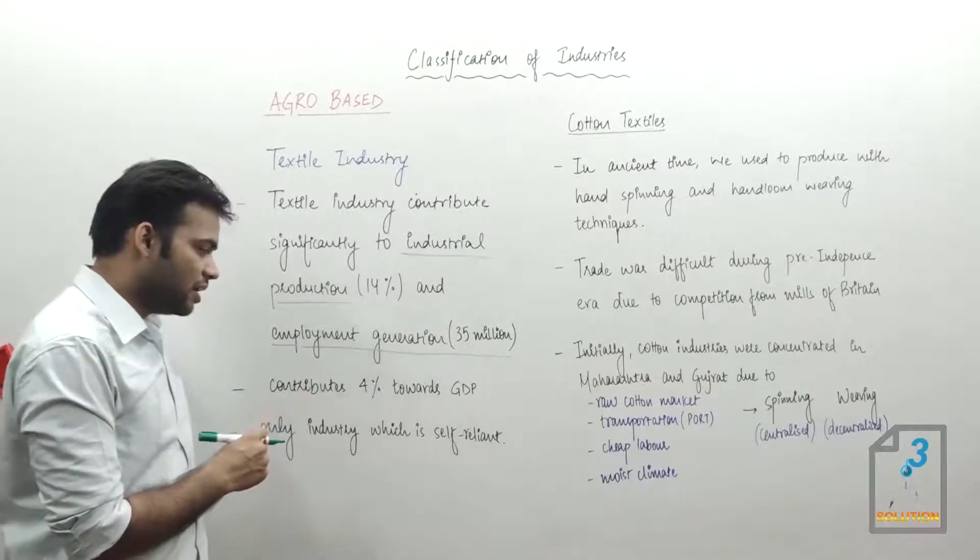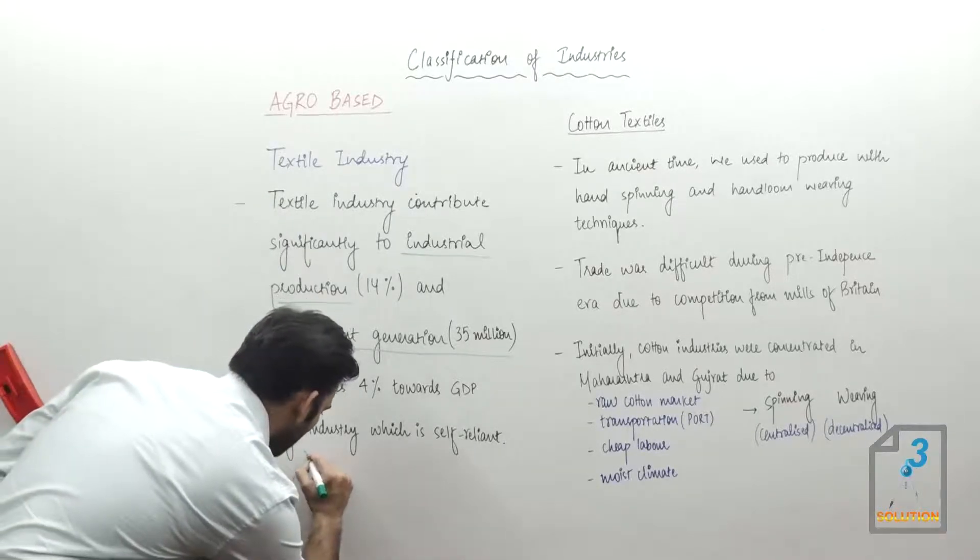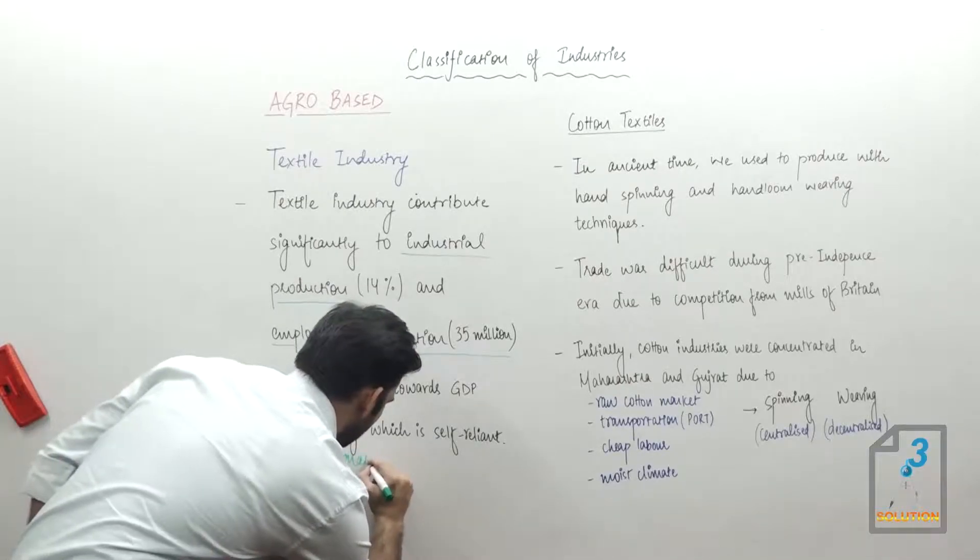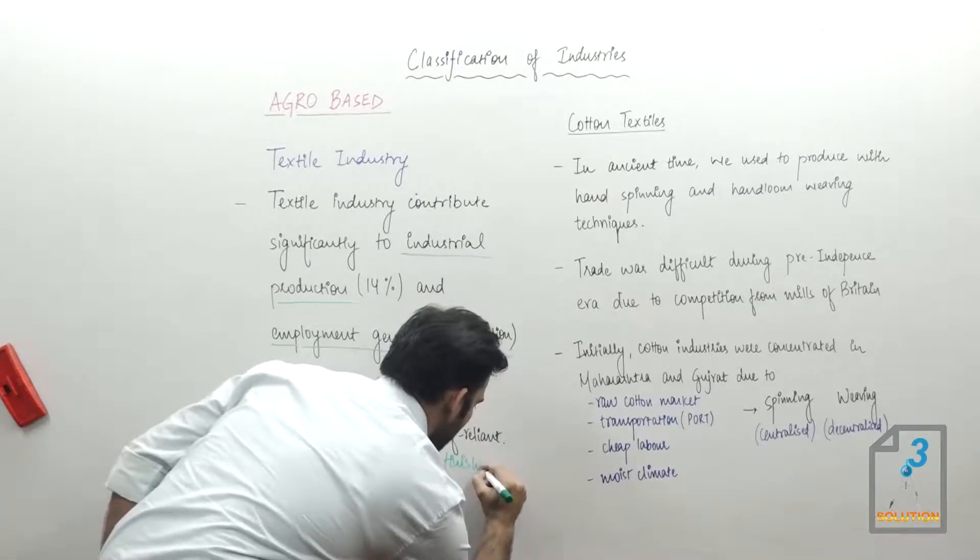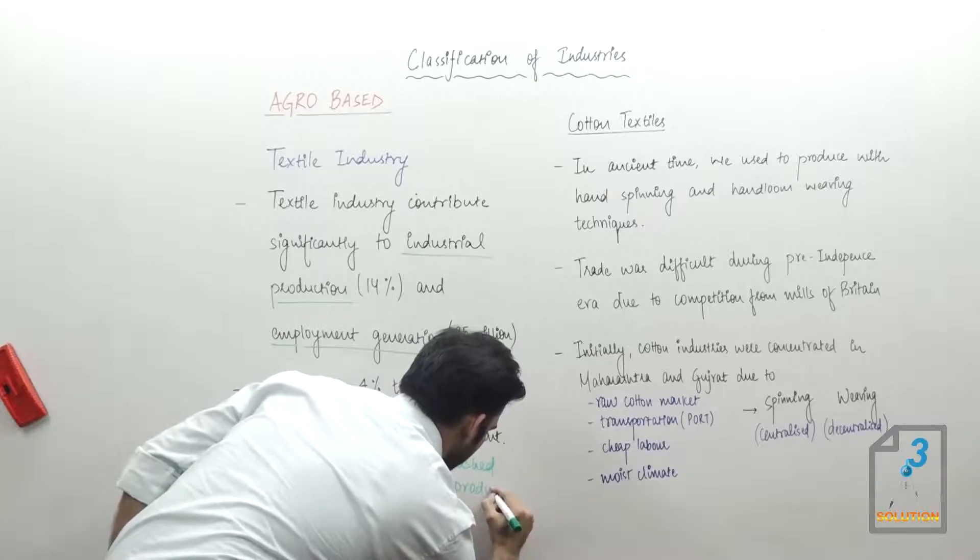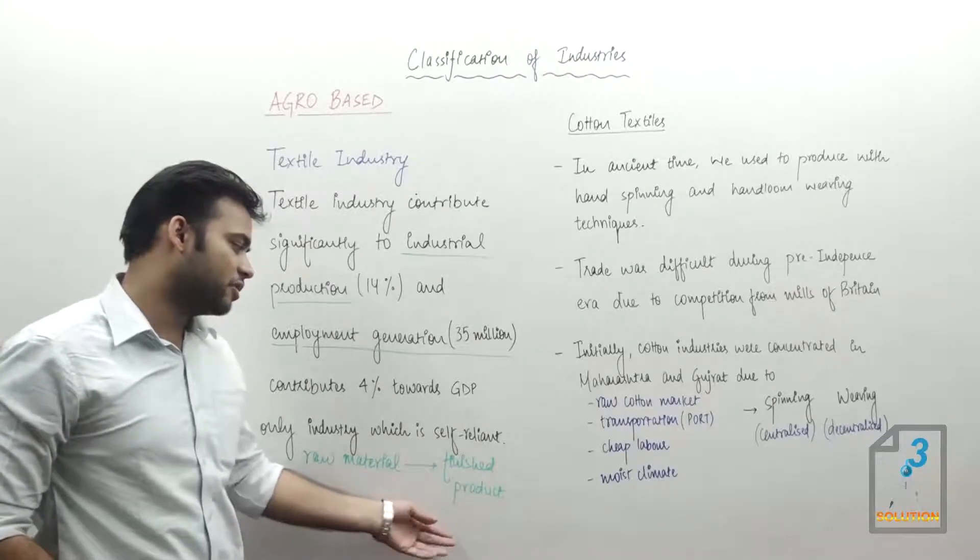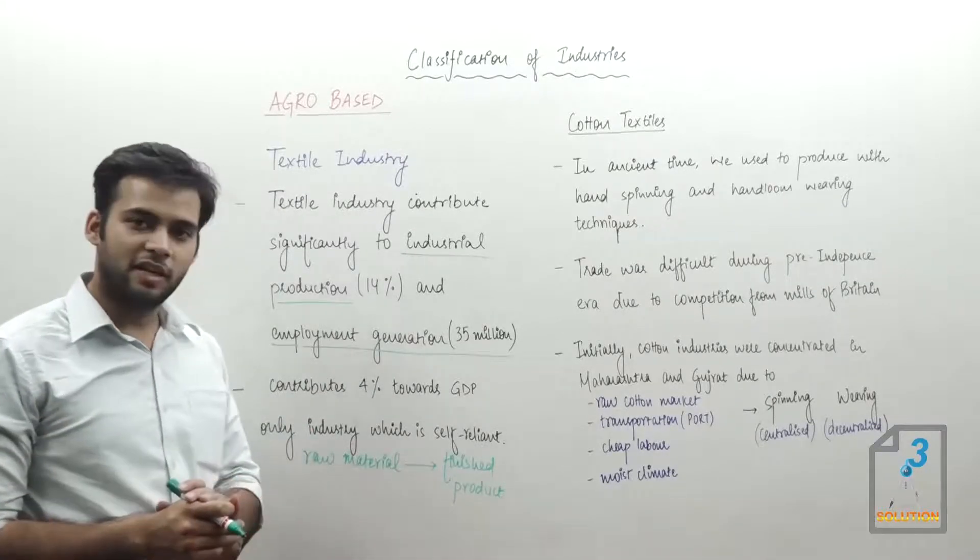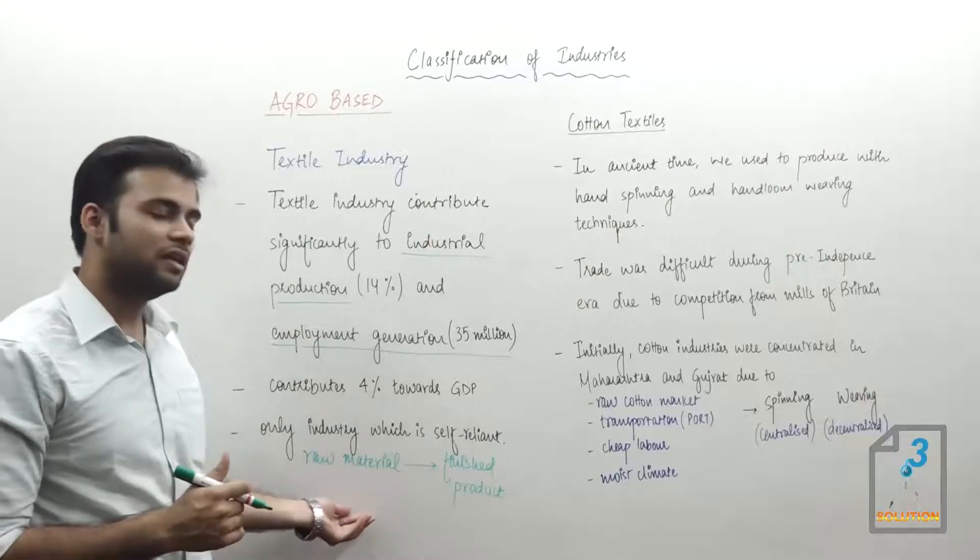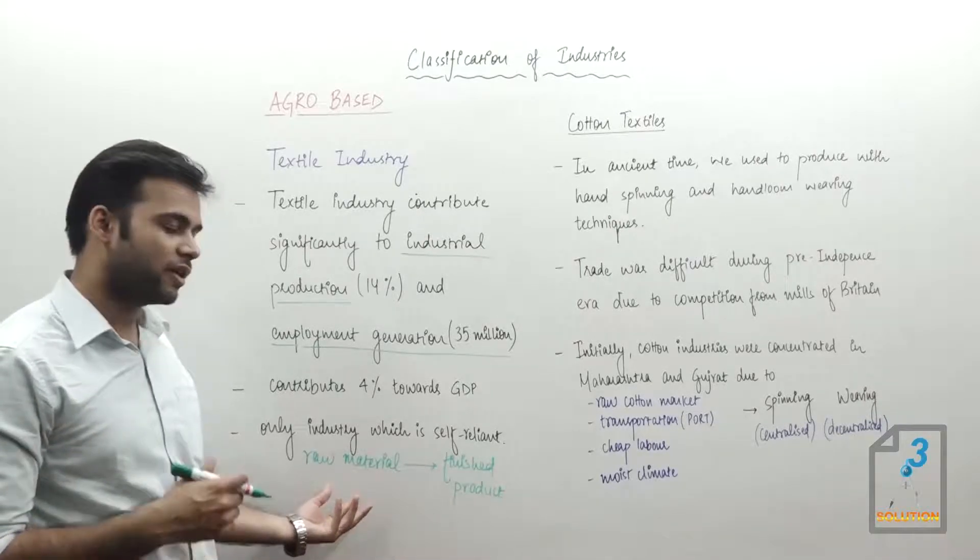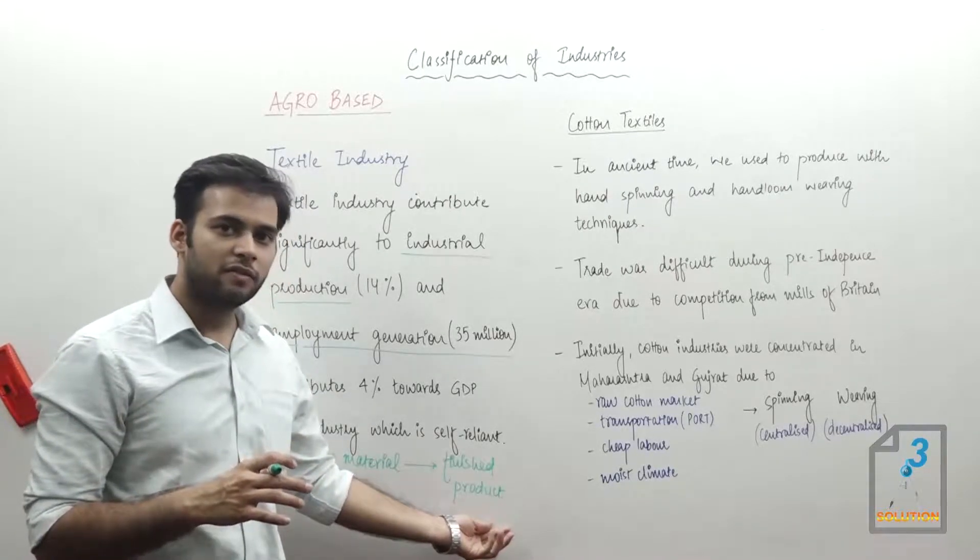Self-reliant means right from the raw material to the finished product, we have all the resources available. We don't need any kind of help from any other country in this regard. We can grow cotton, for example, and we have sufficient technology to make a finished product from cotton.